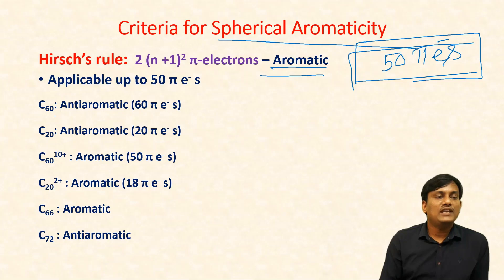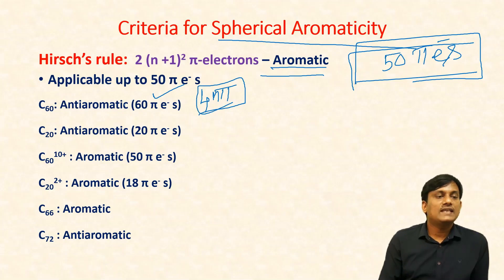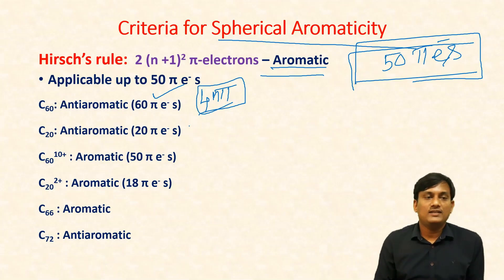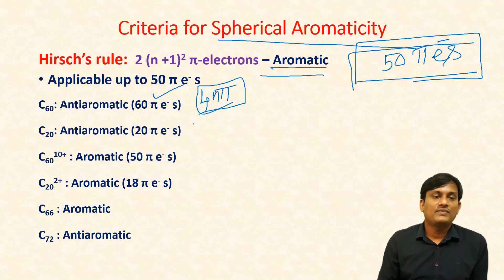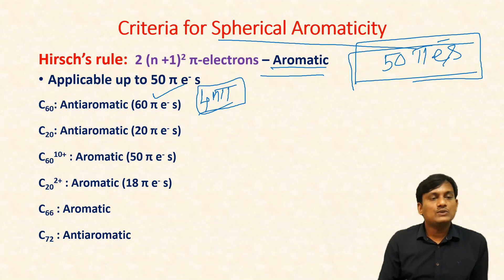How many pi electrons does C60 have? There are 60 pi electrons — it is a 4n pi system. So C60 is anti-aromatic. C20 is also anti-aromatic.